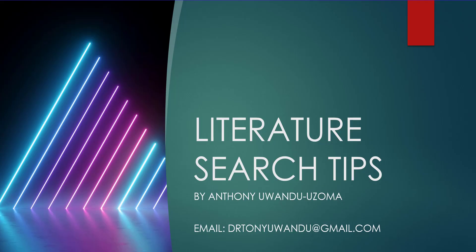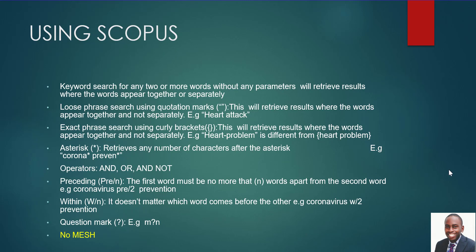Good day everyone, my name is Anthony and today we are going to look at different ways to search for literature - that means to search for articles you can use during your proposal writing, dissertation, or essay writing. The first thing we need to do is look at a list of databases we need in order to do a good literature search in public health. The first database we'll look at is Scopus.